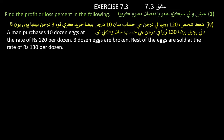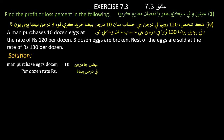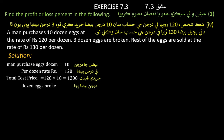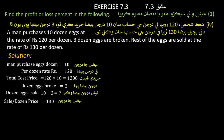Problem 4: A man purchases 10 dozen eggs at the rate of 120 rupees per dozen; 3 dozen eggs are broken, and the rest are sold at 130 rupees per dozen. Total cost price = 120 × 10 = 1200 rupees. Dozens broken = 3, so dozens to sell = 10 − 3 = 7.